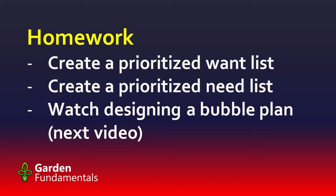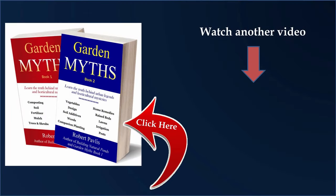Here's the homework for this video: get a copy of the garden design workbook and go through both the wants list and the needs list. Make a list of your wants and needs on two separate lists, then prioritize both of those lists. You're not going to get everything into your garden — by prioritizing, you'll know which ones to really focus on. Then watch the next video, which is all about creating bubble plans. We're finally going to start designing! I'll put a link to the playlist in the top right-hand corner to make it easy to find the next video in the series. See you in the next video.